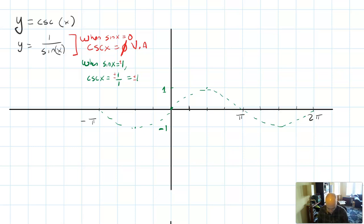Now I'm gonna work off my observation. I noticed that when sine of x is zero, that happens at pi, at 2 pi, at 0, and at negative pi.